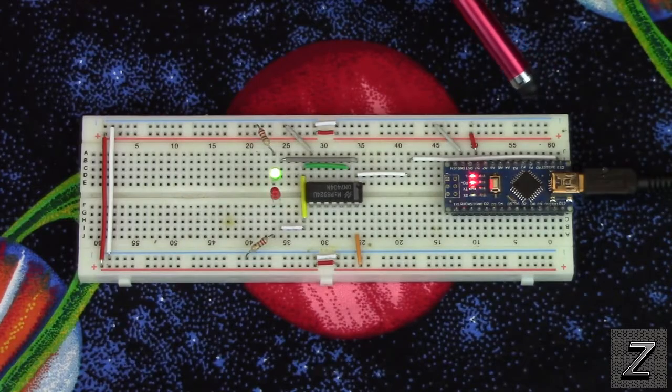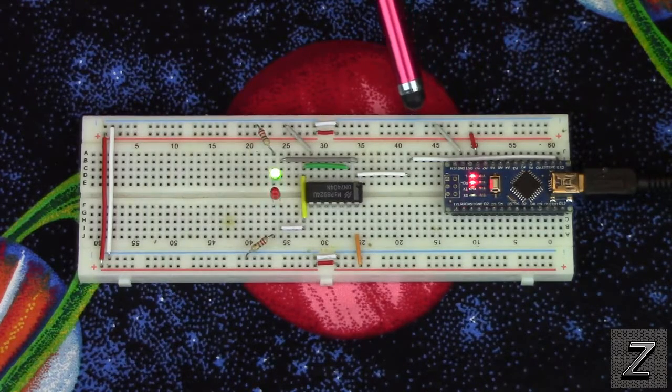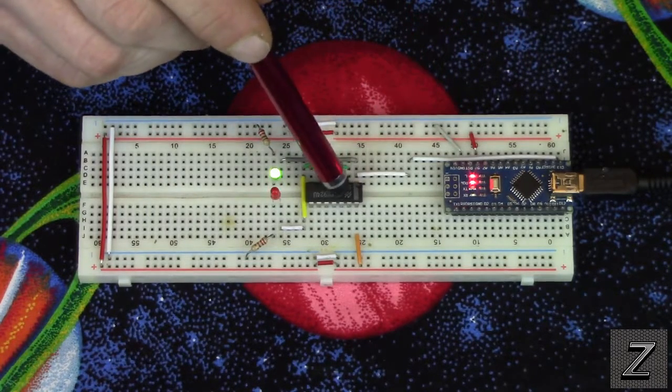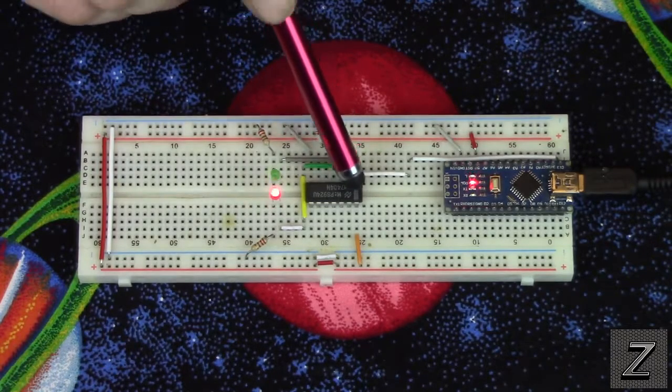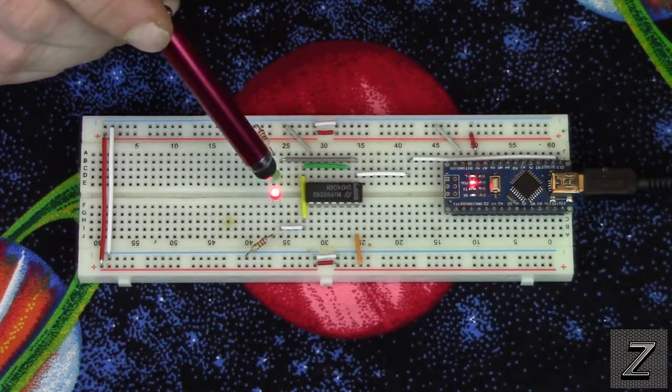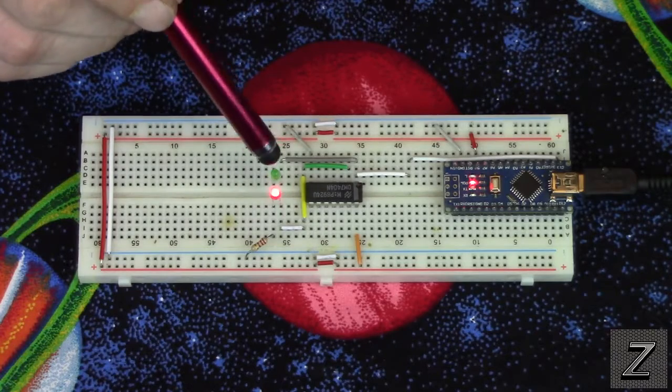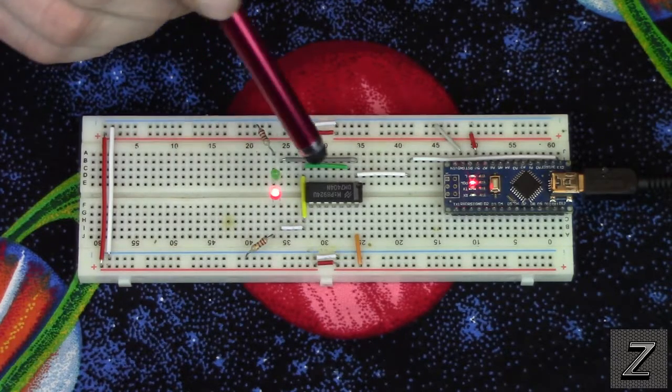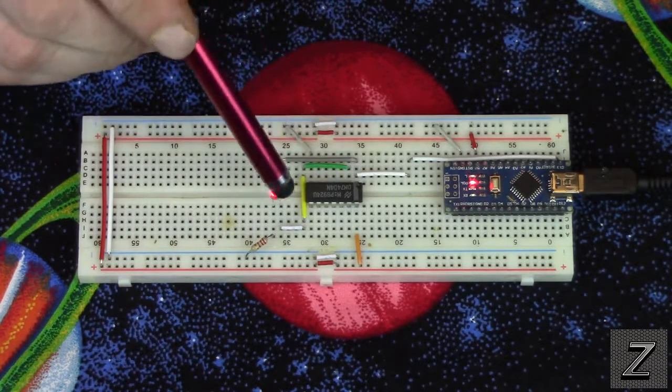I'm just running pin 13 into pin 1 of the hex inverter, and then I'm also from pin 1 of the hex inverter I'm running the green LED, and then from the output of the hex inverter I'm running to the red.